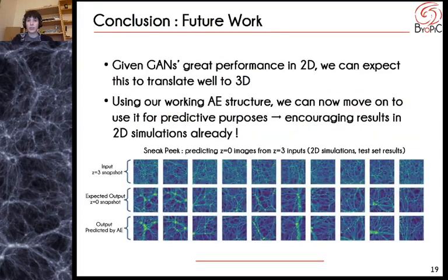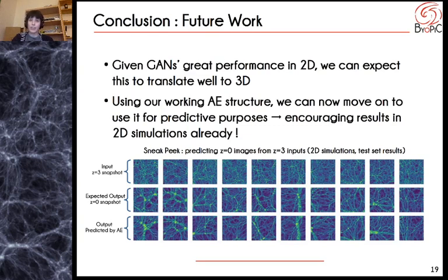Speaking of future work, here's what we're looking to do. First, given our GAN's great performance in 2D, we can expect this to translate well to 3D — so we're looking to try again in three dimensions and apply this to the autoencoder as well. Using our working 2D autoencoder structure, we can also move on to use it for predictive purposes. We already have encouraging results: here is a sneak peek where we train an autoencoder to predict z=0 images when given as input the same images at z=3, and as you can see, it actually finds them pretty well. So this is very encouraging.